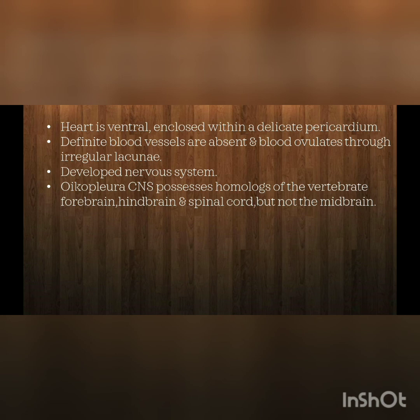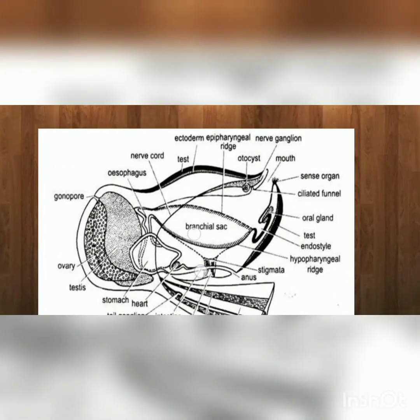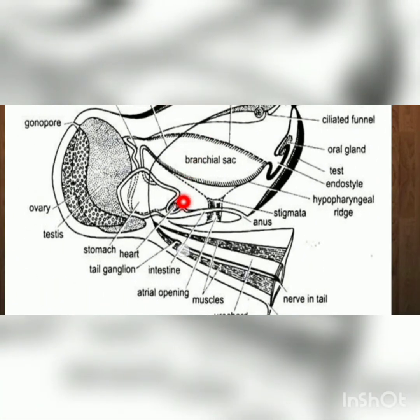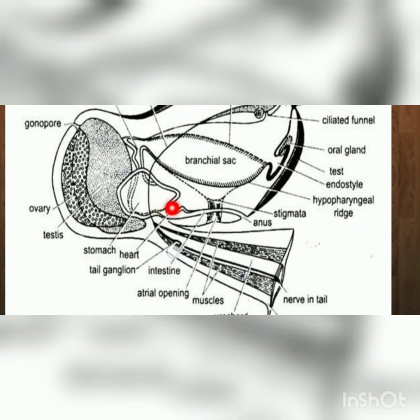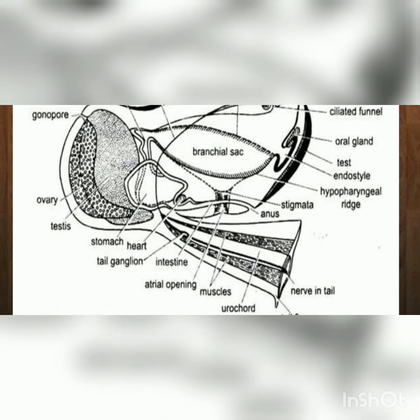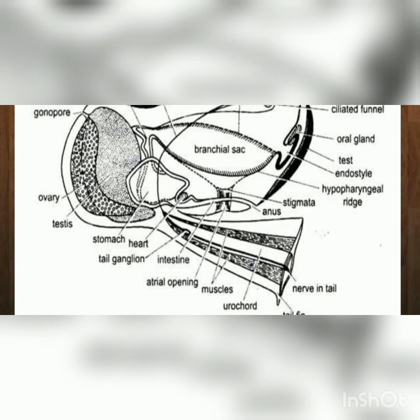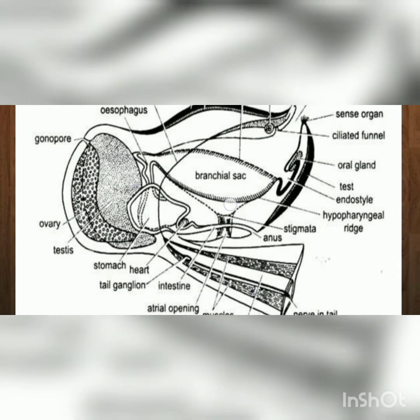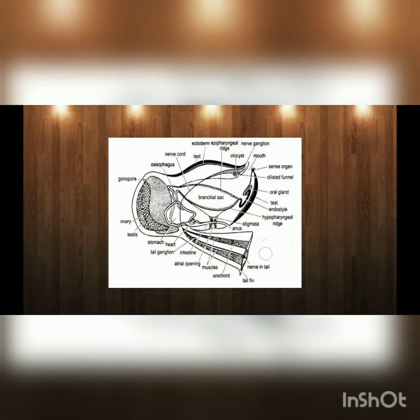The heart is ventral, enclosed within a delicate pericardium. Definite blood vessels are absent, and blood circulates through irregular lacunae. The nervous system is well developed. Oikopleura's central nervous system possesses homologues of the vertebrate forebrain, hindbrain, and spinal cord, but not the midbrain.